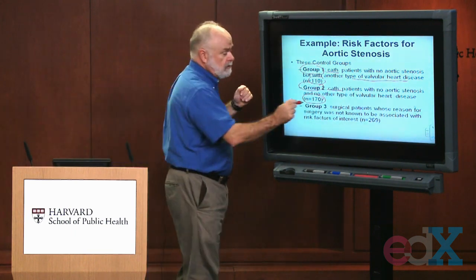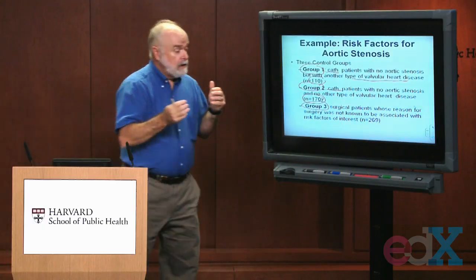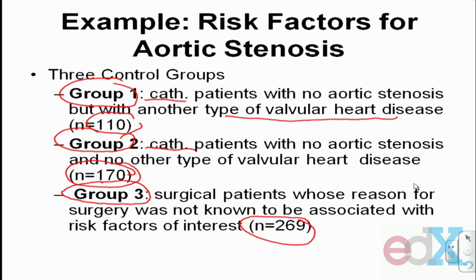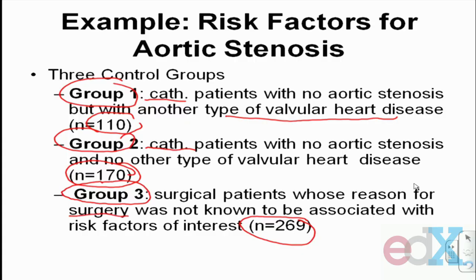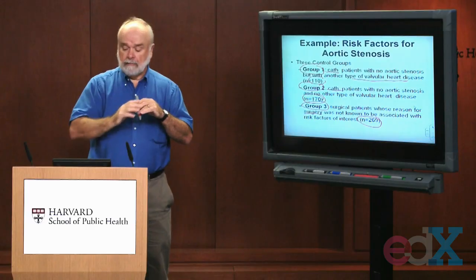Finally, he had a third group — one he collected after our discussion. He had 269 people who were not referred for cardiac catheterization. We don't know whether they had aortic stenosis or not. They were people who underwent surgery at our hospital for a disease that, as far as we know, was not caused or prevented by smoking, hypertension, high cholesterol, or family history of heart disease — any of the factors we were looking at as potential risk factors for aortic stenosis. Is group three an appropriate control group?